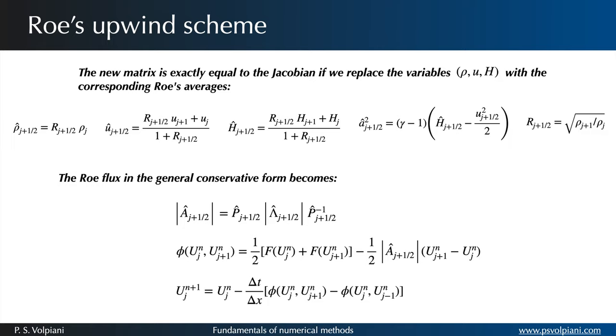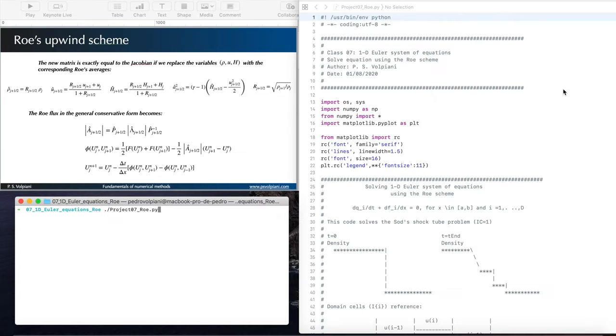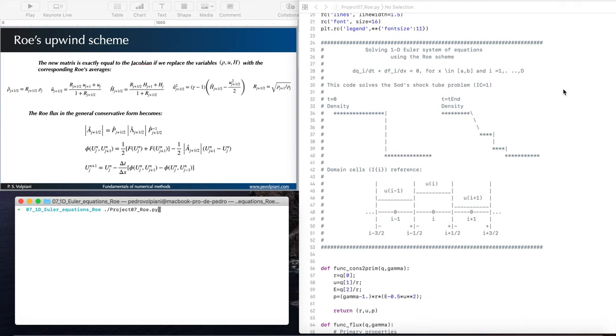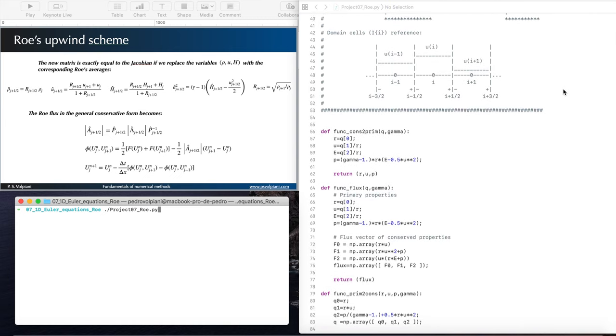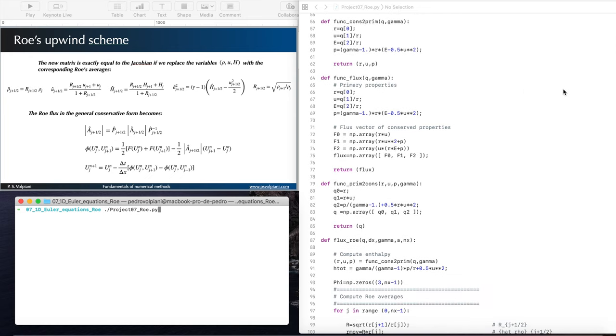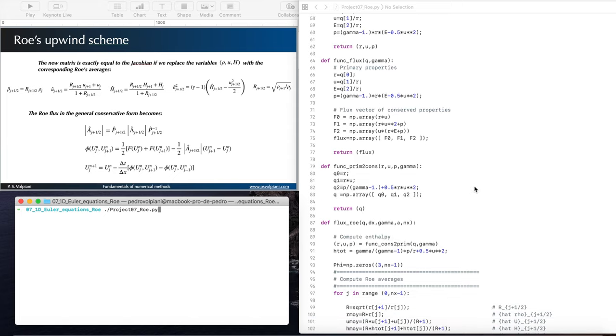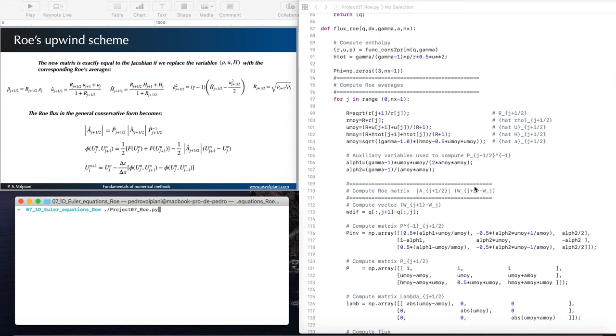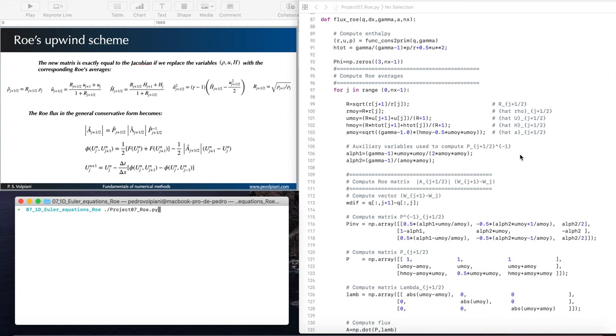The Roe flux in the general conservative form can be written like this. Let's see now how it is implemented in our code. The Python script is similar to the one used to solve the 1D Euler equations with the Lax-Wendroff scheme. But this time I added some functions. So here I compute the primitive variables, the flux vector, the conservative variables and here is the main function where I compute the Roe flux.